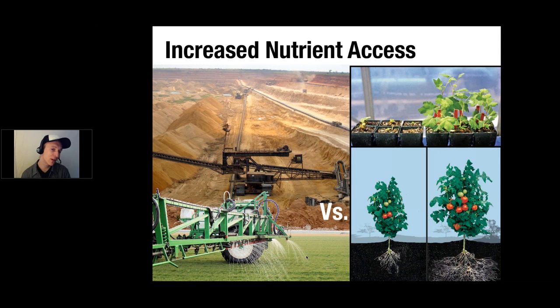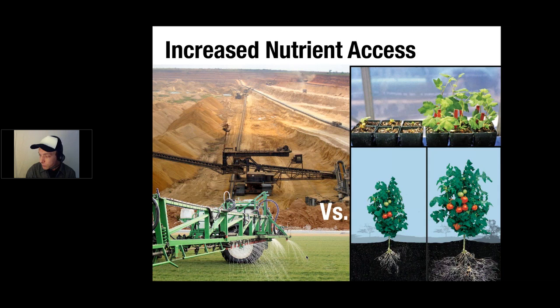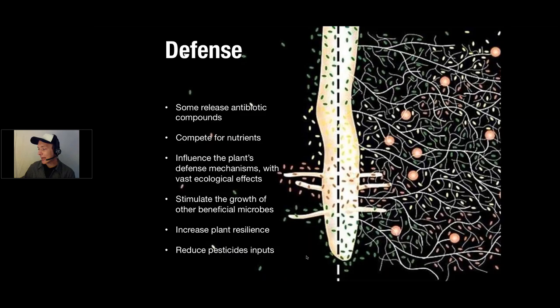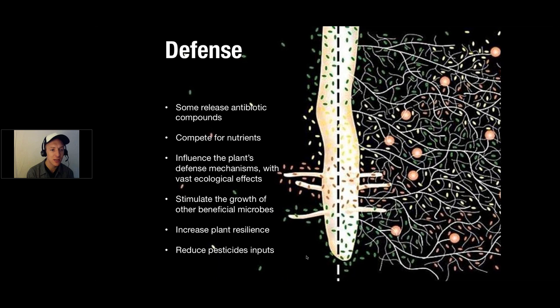Mycorrhizal fungi also do a lot to defend the plant, both as a physical barrier when the mycelium is enshrouding the root tip, but also by releasing all kinds of antibiotic compounds. They can release their own, they can influence the plant's own defense mechanisms. The fungus itself might just compete for nutrients and out-compete competitors, and it can also stimulate the growth of other beneficial microbes, overall increasing plant health and reducing our need for pesticide inputs. So lots of studies have been done with mycorrhizal fungi, especially the arbuscular mycorrhizae.